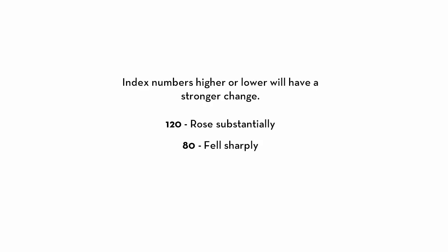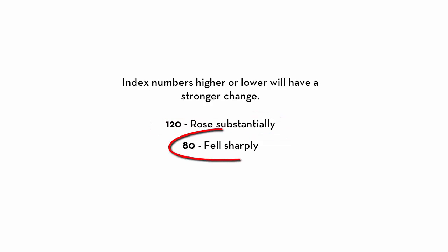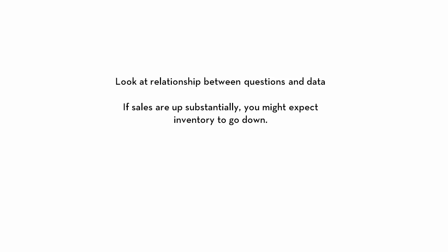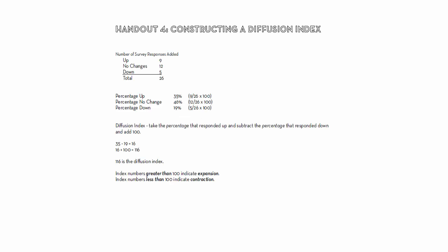For example, you may characterize an index number of 120 as rose substantially. You might describe an index number of 80 as fell sharply. You will also want to look at the relationships between the questions or your data. If sales were up substantially, then you might expect inventories to have gone down — that would make sense if people are selling more items. Good luck constructing your diffusion index and seeing what the data tells you about the local economy.